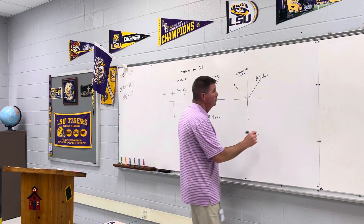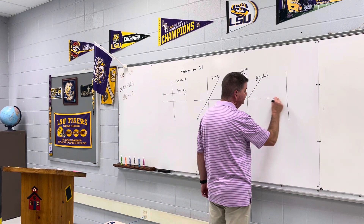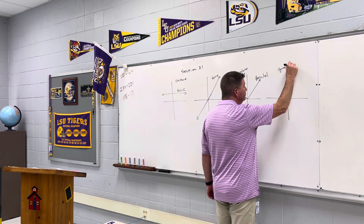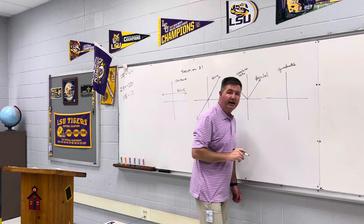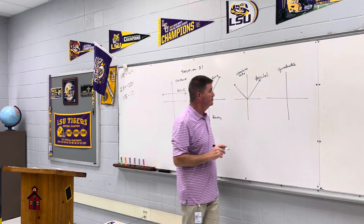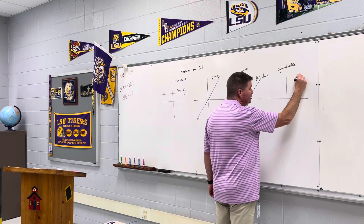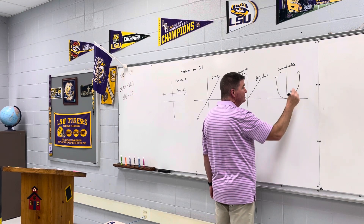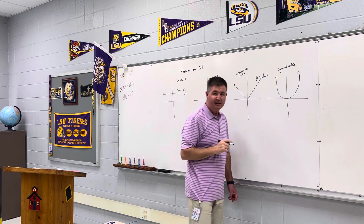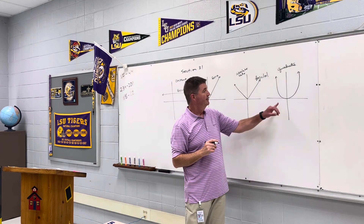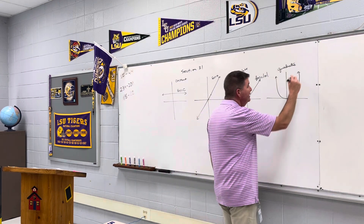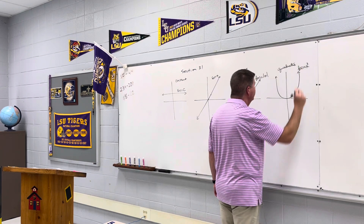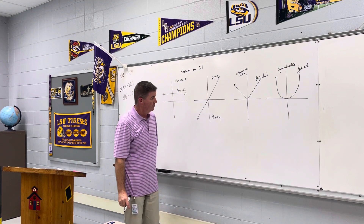Then we have the quadratic function. The quadratic is where x is squared. It looks like a U shape, and it's called a parabola. This is one we use a lot: f(x) = x².